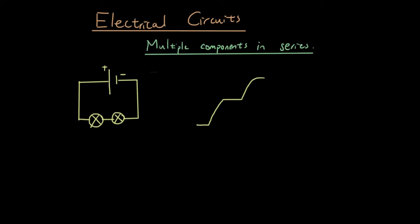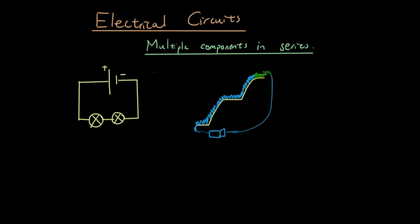If you guys remember last lesson, we gave you an example to model an electrical circuit — a real-life situation. Instead of electrons flowing through the circuit, you can imagine the electrons as water flowing down a hill. Starting at the negative terminal, you flow down to the positive terminal, and then there's a water pump that pumps the water back to the top again, and then it flows down again.